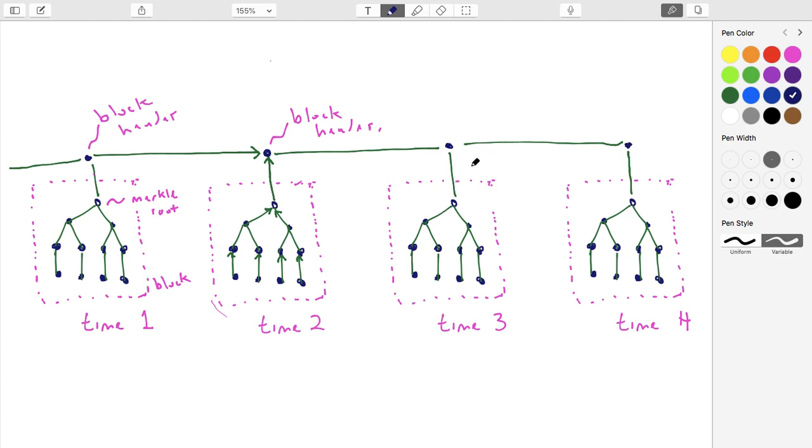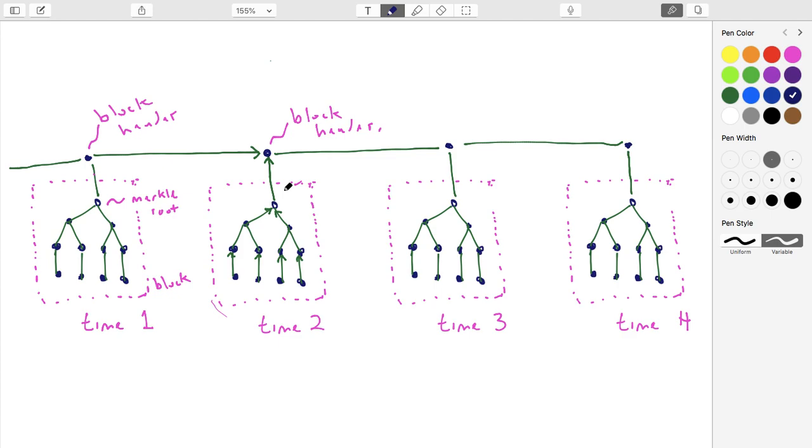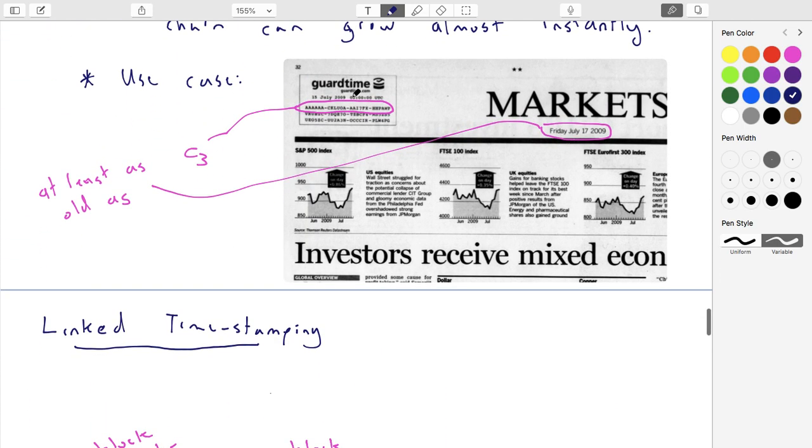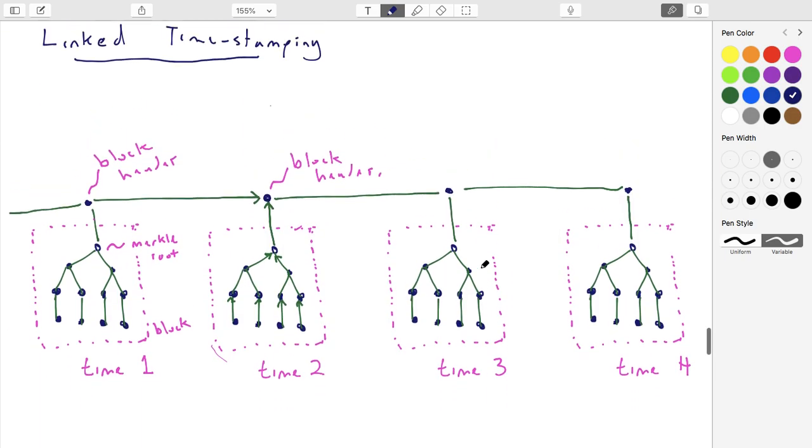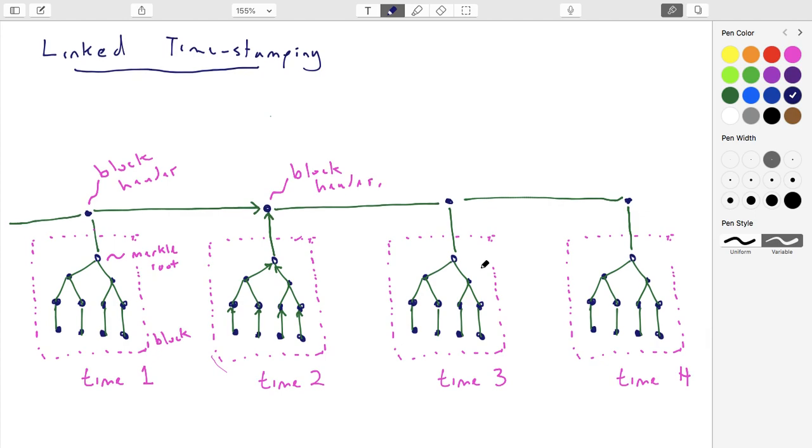So we call this the linked timestamping data structure. If you know about Bitcoin, you'll see that this actually looks a lot like a blockchain. In fact, a blockchain is this plus one other little twist that we're going to add in a second. You might be surprised to learn that this data structure is actually much older than Bitcoin itself. People were talking about it in the 90s. There's a company called Surety that does the New York Times, and some of the people involved in that company had invented this technique back in the 90s. It went under the name linked timestamping.